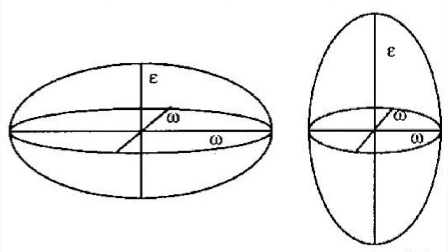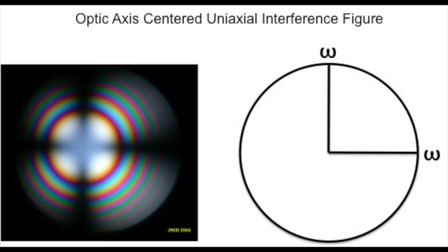For uniaxial minerals we label our principal axes as epsilon and omega. In uniaxial minerals, two axes are always equal to each other — these are always omega. In the microscope we observe a slice of these ellipsoids. When a grain produces an optic axis centered uniaxial interference figure, we are looking at a slice of the ellipsoid that is close to an omega-omega section.